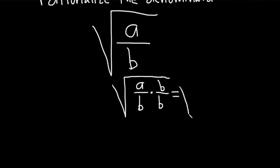Because now this is equal to a over b, a b rather, over b squared.